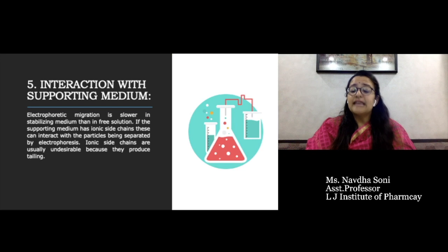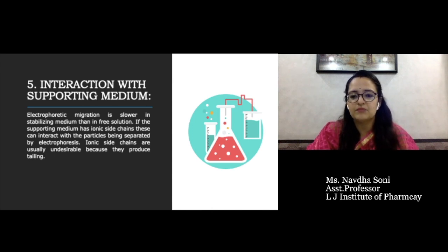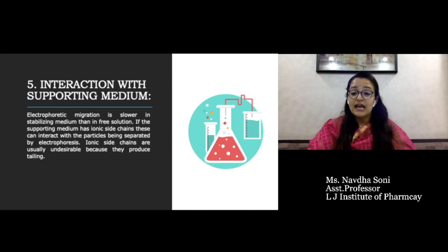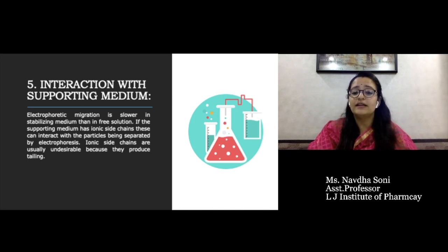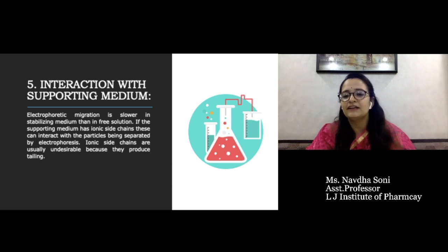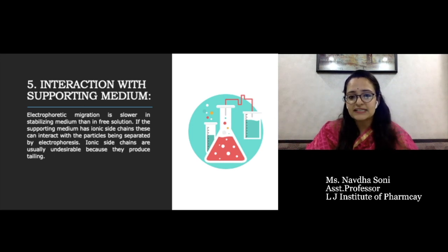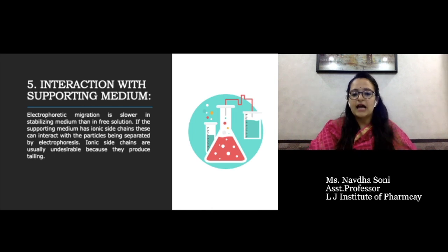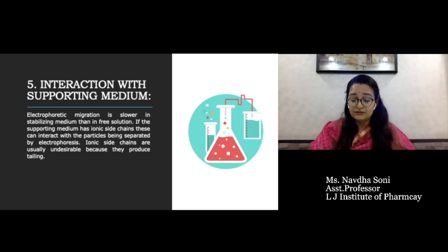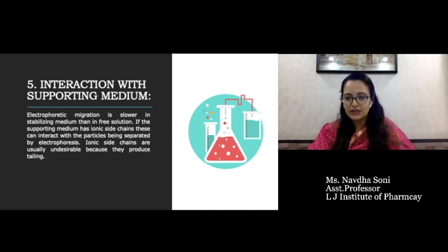The next factor is interaction with the supporting medium. Electrophoretic migration is slower in a stabilizing medium than in free solution — there are two types of electrophoresis: free solution technique and zone electrophoresis, which we will see in the next video. If the supporting medium has ionic side chains, these can interact with the particles being separated. The ionic side chains are usually undesirable because they produce tailing, similar to tailing and fronting seen in chromatography.